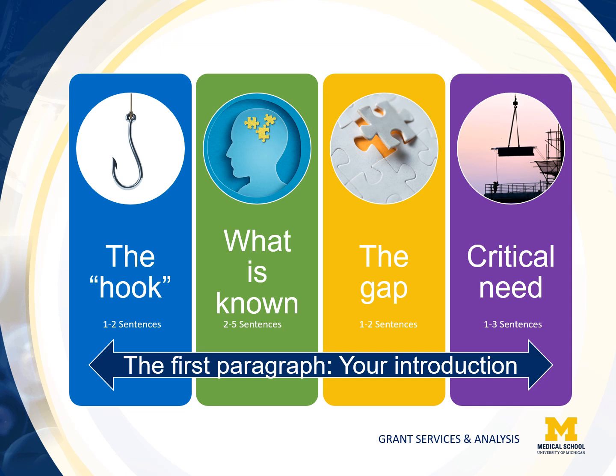Next is the gap. In one to two sentences, discuss the gap which needs to be filled — for instance, what we still need to learn or accomplish in order to achieve the big picture addressed in the first sentence. This is one of the most important parts of the paragraph. Here you will identify the piece of knowledge needed to advance the field vertically. Suggested ways to start this sentence include phrases like 'what is not known' or 'there is a clear lack of.' Finally, in one to three sentences, write out the critical need — why does this gap exist, why is it a significant problem, and what are the consequences of not meeting the need. At the end of this paragraph, the reviewer should be convinced there is a gap impeding progress in the field.